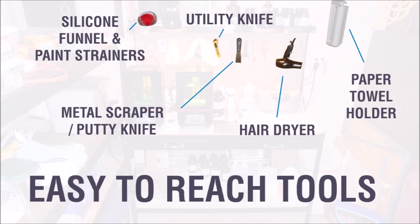A silicone funnel and a paint strainer filter are handy when pouring unused resin back into a container. A hairdryer is going to be seen later in the video. A paper towel holder is a must. You need to be able to grab and tear off a sheet of paper towel with one hand only. And a metal scraper or putty knife is an absolute necessity.